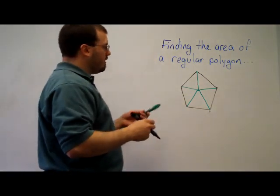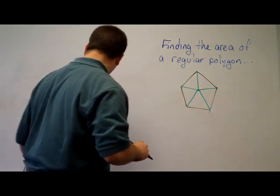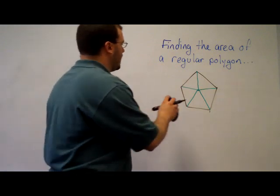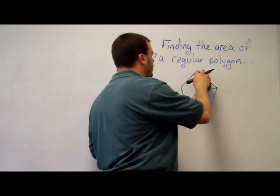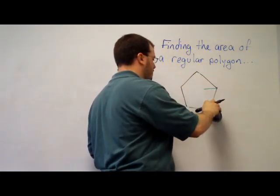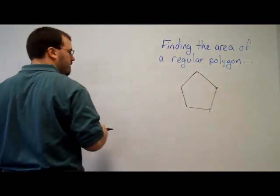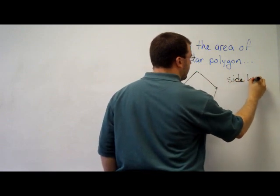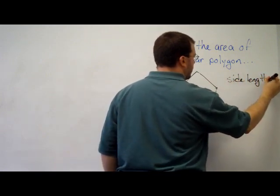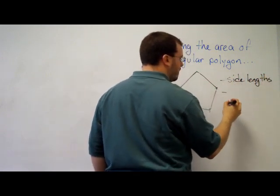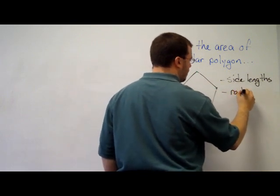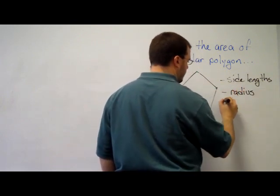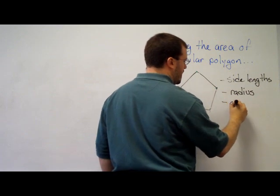To do that, we're going to need to know some piece of information. On these problems for finding the area of a regular polygon, typically you will know one of three things: you'll either know the side lengths, or you'll know the radius, or the apothem.